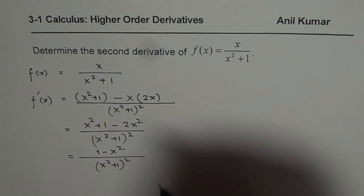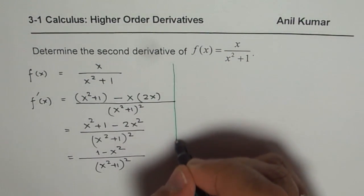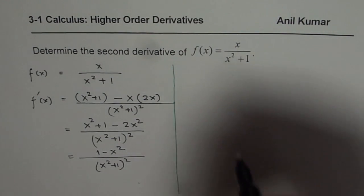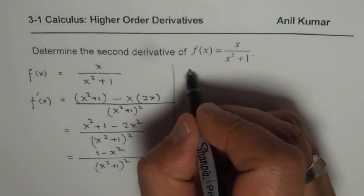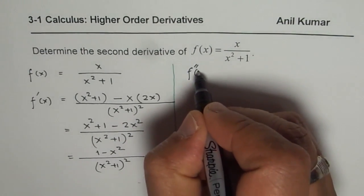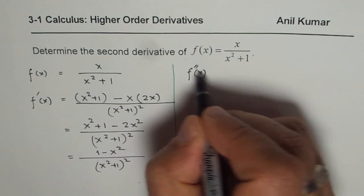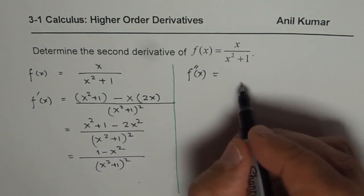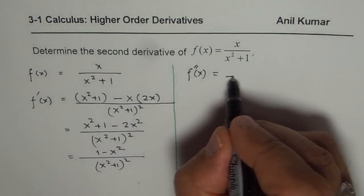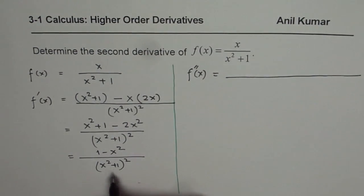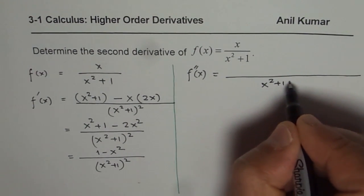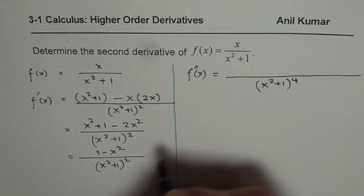The derivative of the first derivative is the second derivative. So let us find the second derivative. The second derivative is represented by f double prime of x. We will again apply the quotient rule, giving us the square of the denominator, which is (x squared plus 1) to the power of 4.